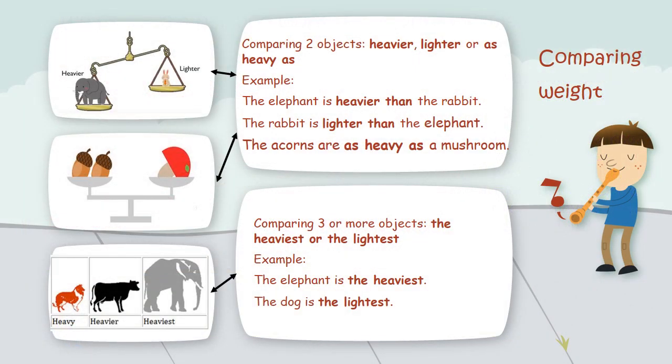Let's recap what we have discussed before. We use heavier, lighter, or as heavy as to compare the weights of two objects. For example, the elephant is heavier than the rabbit. The rabbit is lighter than the elephant. The acorns are as heavy as a mushroom. While to compare the weights of three objects or even more, we use the heaviest or the lightest. For example, the elephant is the heaviest. The dog is the lightest.